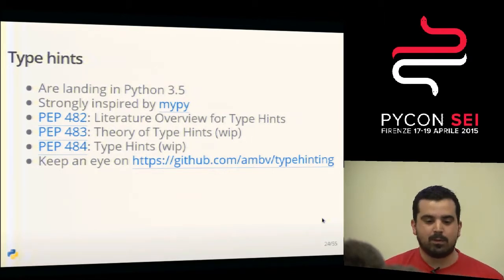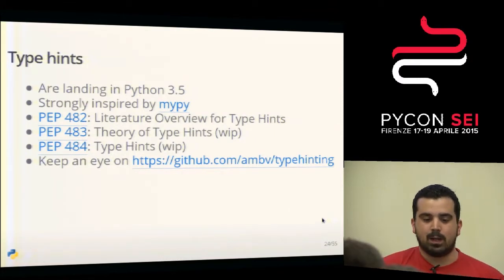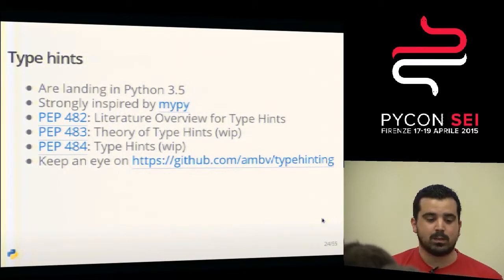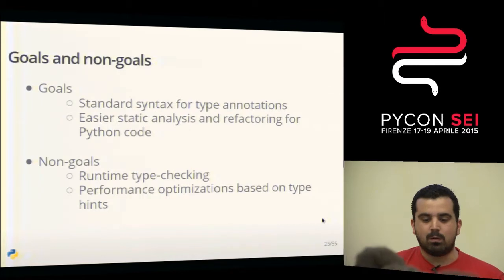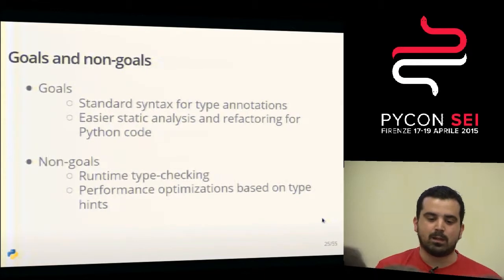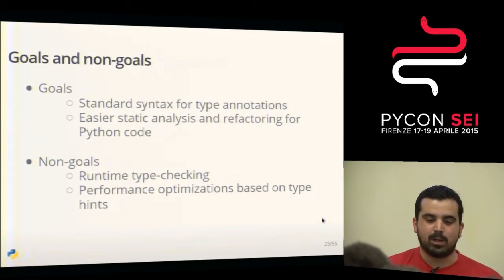There is an ongoing proposal for Python 3.5 inspired by a library called MyPy, which you may have heard about, that implemented a type checker on top of function annotations in Python. There are several PEPs in progress about this proposal. The goal is to have a standard syntax for type annotations, because there are many different ways to annotate Python programs. The main purpose is to improve tooling, static analysis, and have more sophisticated tools for working with Python programs.